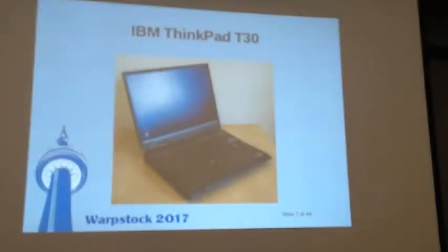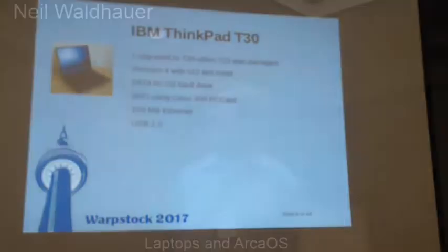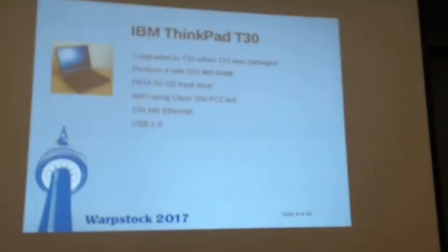I replaced it with a T30, which was a much finer machine. This is when I first met Louis, so I bought a Cisco 350 PC card Wi-Fi from him. He was very essential in getting the OS/2 community up on Wi-Fi at the beginning. I found that to be pretty useful as I was traveling and needed internet support. I was one of the early guys who needed it working. My scripts to connect and disconnect went worldwide — they're not good scripts, but a lot of people used them.